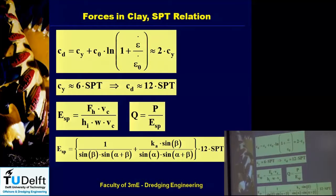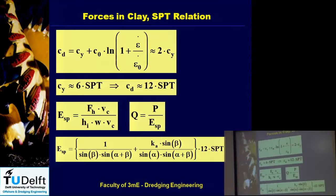Something important for clay: the cohesion is roughly six times the SPT value — you can find that in many soil mechanics books. From soft clay to very hard clay they have a range of SPT values for each category, and it's roughly six times the SPT value. But because the strengthening effect has a factor of roughly two, for us the cohesion we will use is twelve times the SPT value, or two times the cohesion shear strength you get from a laboratory. You multiply it by a factor of two and that's what you can use in dredging.